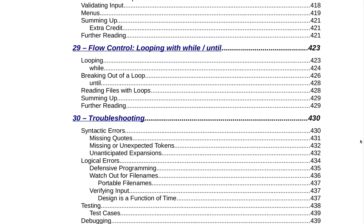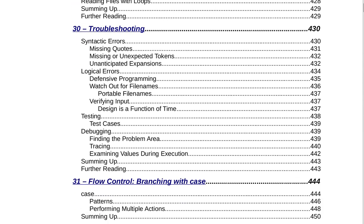Section 29 is Flow Control: Looping with While and Until. That covers looping with while, breaking out of a loop, until, and reading files with loops. Summing up and further reading. Section 30 is Troubleshooting, which includes syntactic errors, missing quotes, missing or unexpected tokens, unanticipated expansions, logical errors, defensive programming, watch out for file names, portable file names, verifying input, design is a function of time, testing, test cases, debugging, finding the problem area, tracing, examining values during execution, summing up, and further reading on page 443.